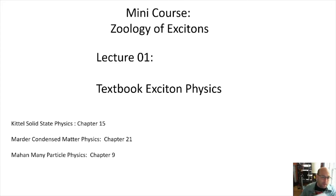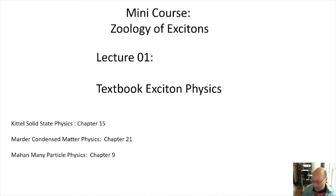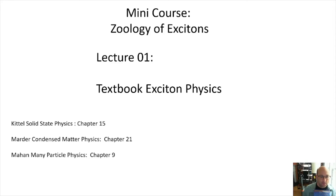The classic one is Kittel's Solid-State Physics. This is used at both undergraduate and graduate level, and Chapter 15 has a good discussion of exciton physics. Slightly more advanced is Marder's Condensed Matter Physics, in Chapter 21, where they do a similar discussion to Kittel but with slightly different notation, and this book is a slightly more advanced treatment in general.